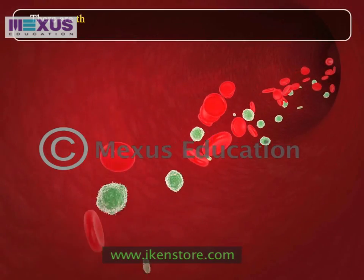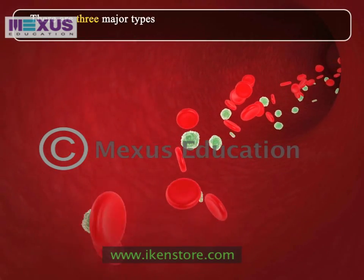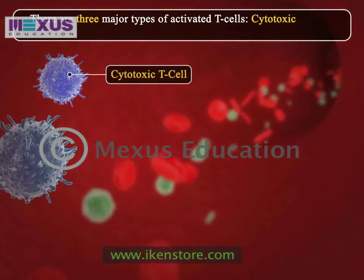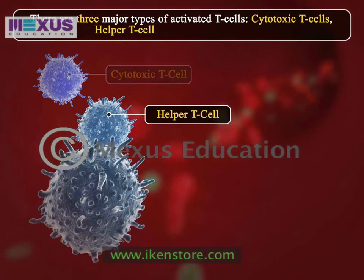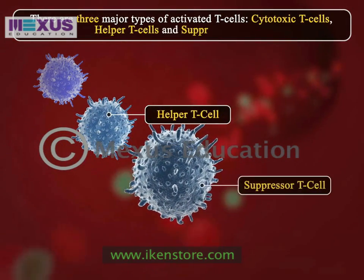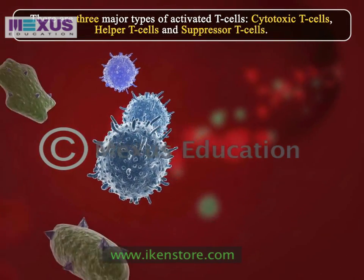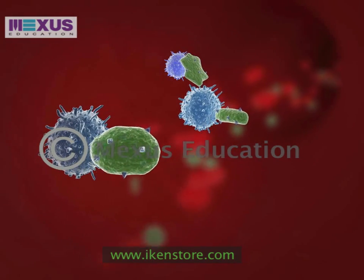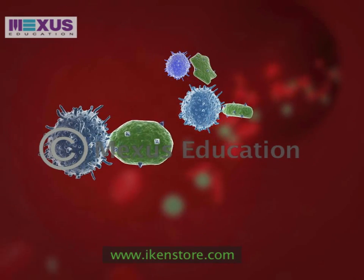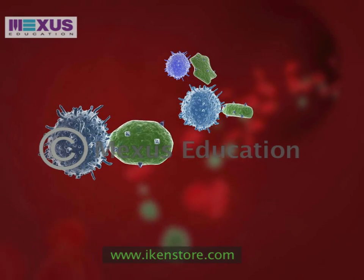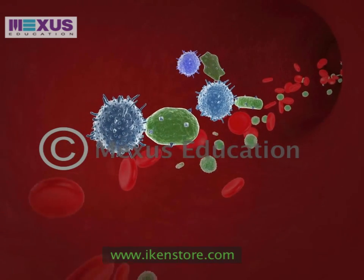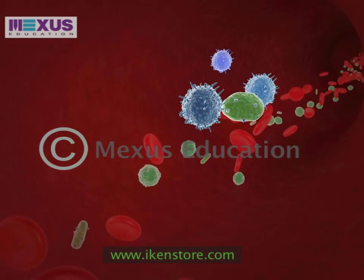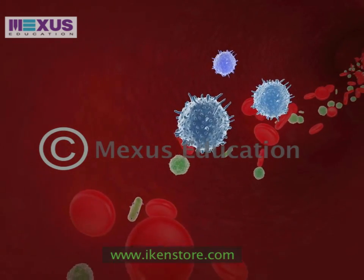There are three major types of activated T cells: cytotoxic T cells, helper T cells, and suppressor T cells. Each of these cells deals with a specific antigen. These activated T cells enter the circulation and migrate to the site of antigenic stimulation.